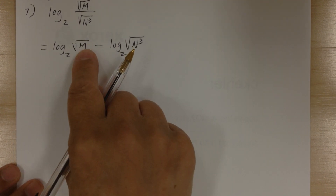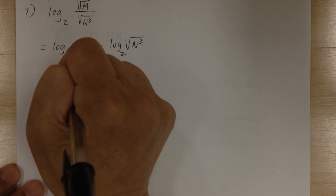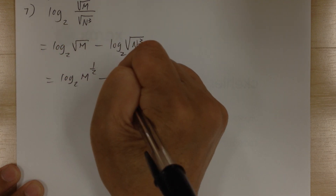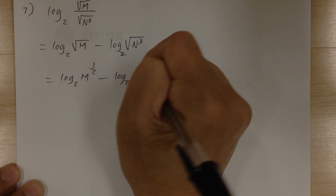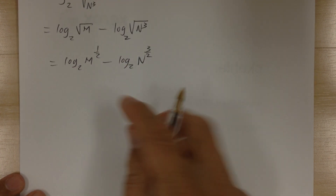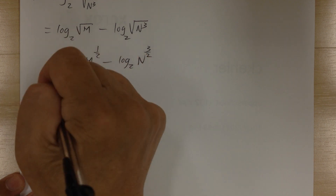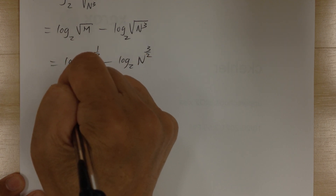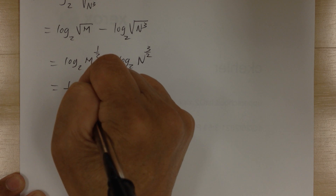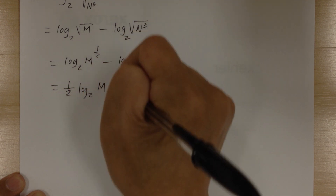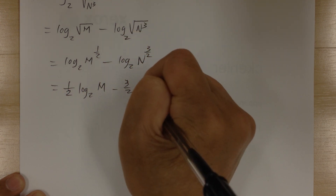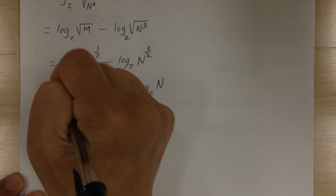Then after that I'm going to make this into exponential form. This will be n to the 3 over 2 power. Then I'm going to move this to the front using the third log, and this one goes to the front using the third log as well. And that's it.